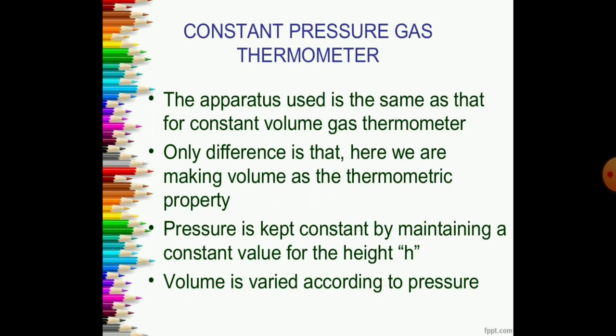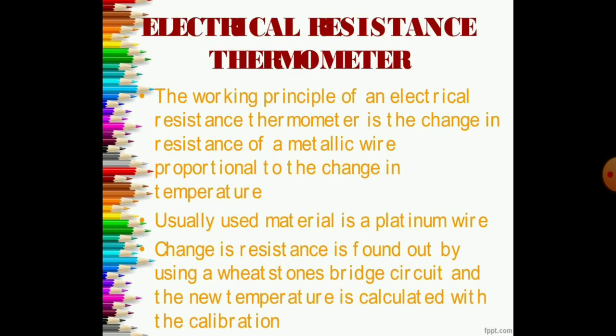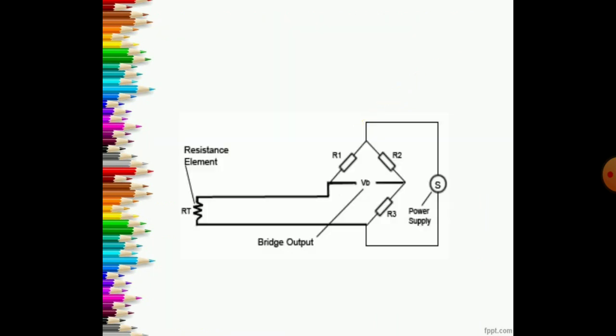Another one is constant pressure gas thermometer. The apparatus used is the same as that of constant volume gas thermometer. In the same way, electrical resistance thermometer and the line diagram shows electrical resistance thermometer. These are all used thermometers for particular measurement of temperature. This is all about thermometers and their types and application.